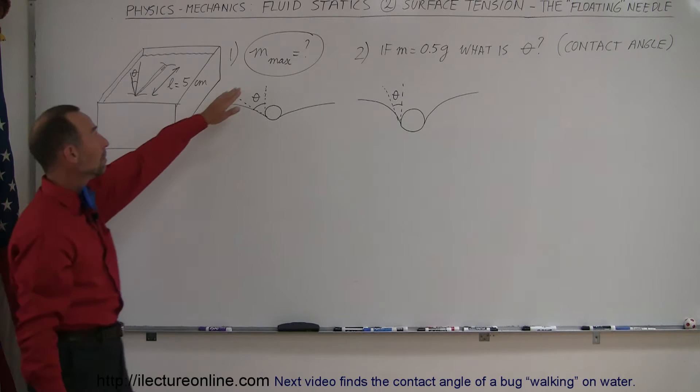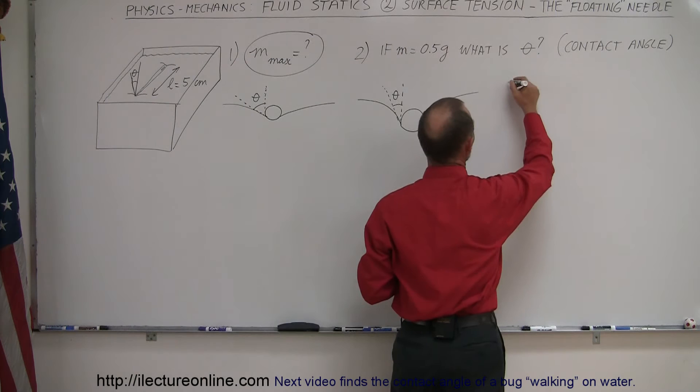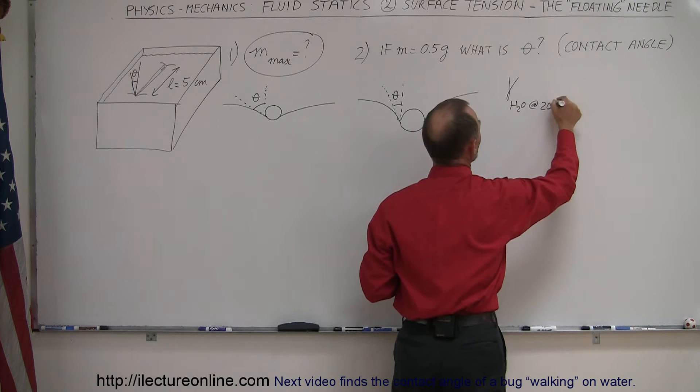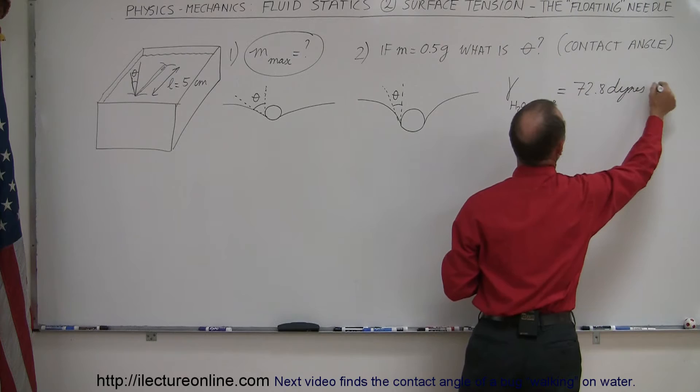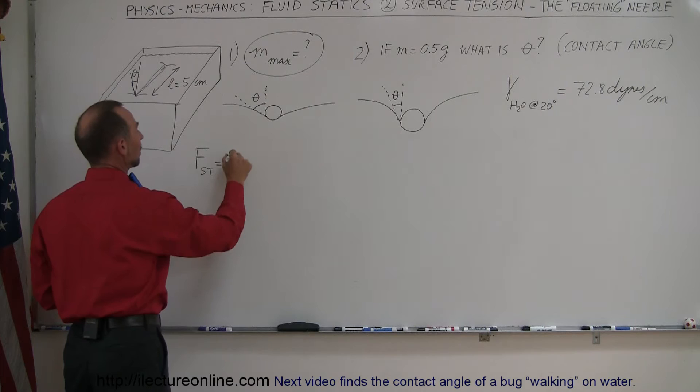So in this example, what is the maximum mass that this needle can have if we assume it to be 5 centimeters long, placed on top of the surface of water? We need to know the surface tension of water — at 20 degrees Celsius, the surface tension of H₂O is roughly 72.8 dynes per centimeter. The needle is 5 centimeters long, so let's go ahead and figure it out. The force caused by the surface tension is equal to the coefficient of surface tension times the length along the edge of the object.